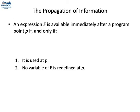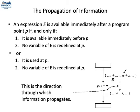Well, let's see. First, an expression is available after a program point P if that expression is used at P and it's not redefined by that program point P. Or, if it was available before P and it's not redefined by P, so the information in this case propagates along the same direction as the edges of the control flow graph. We say, in this case, that the analysis is forward.